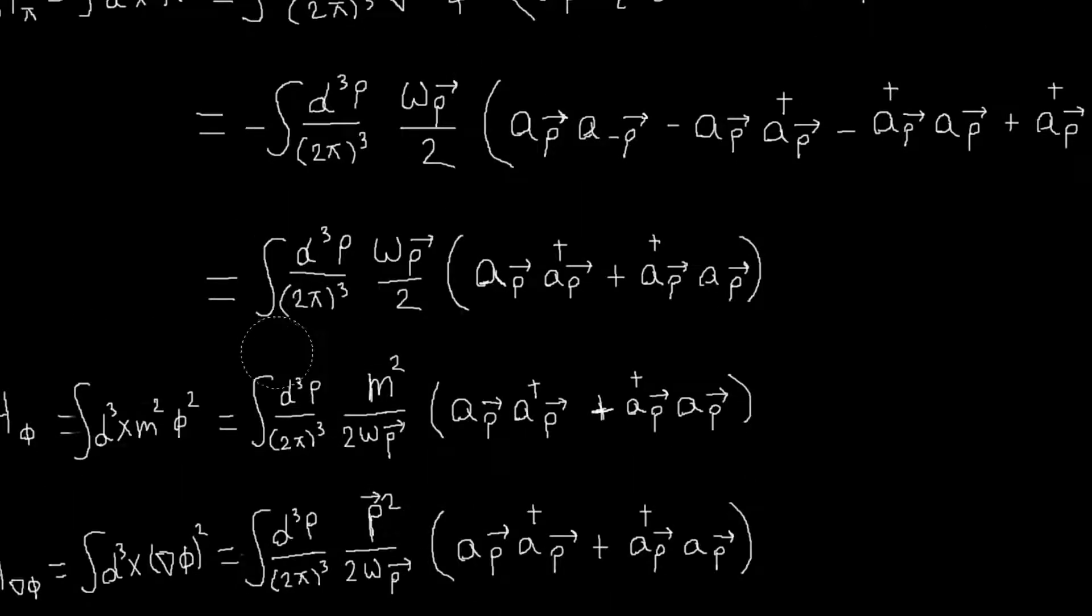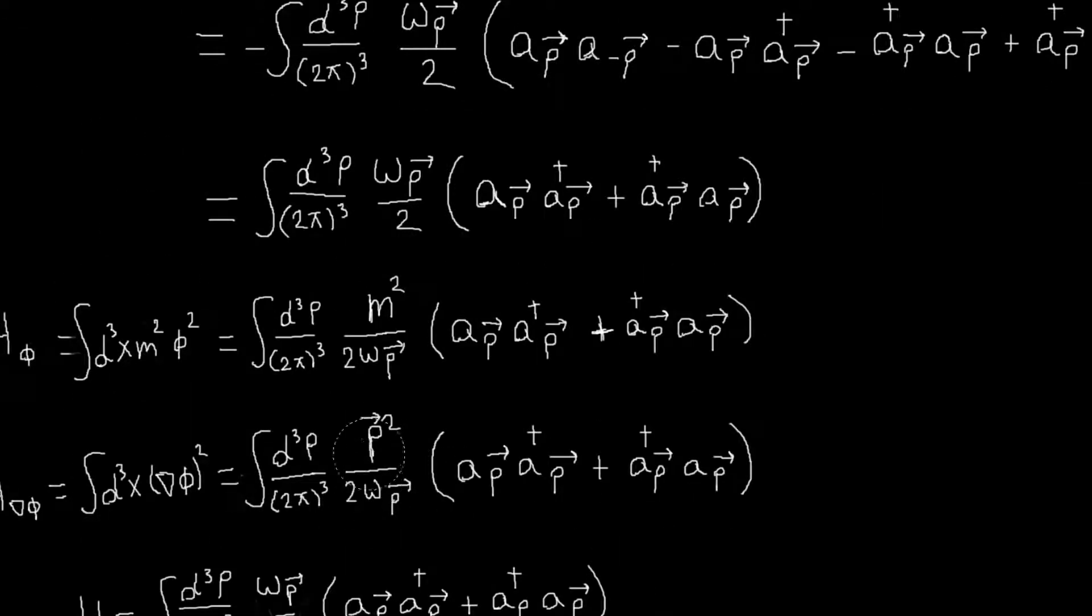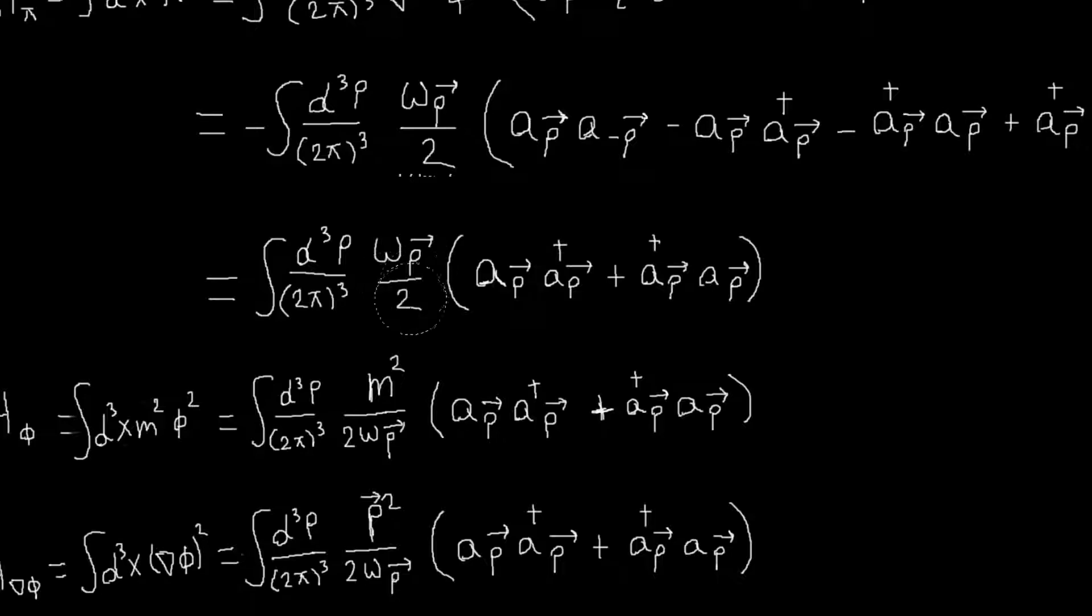So then we just need to add all of these terms together to get our total Hamiltonian. And we can notice that if we sum these two terms, they're exactly the same, only here I have an m squared and here I have a p squared. So if I sum them, we'll just get m squared plus p squared over 2 omega_p, but m squared plus p squared is omega_p squared. So that will cancel with one of the omega_p's, and it will just leave me with omega_p over 2. So basically, this term plus this term is equal to this term.